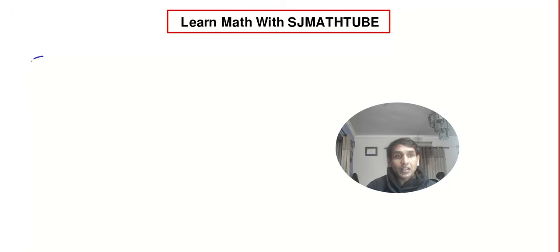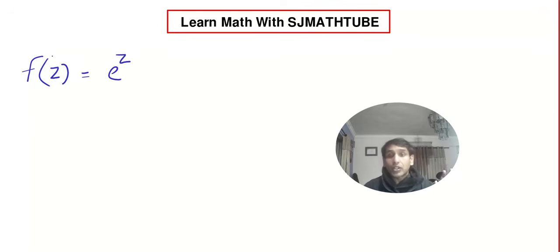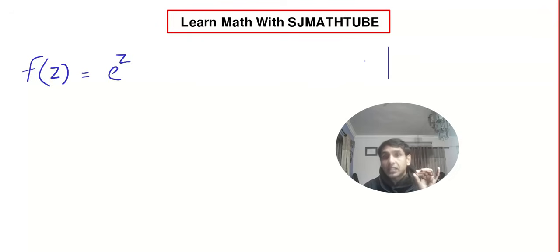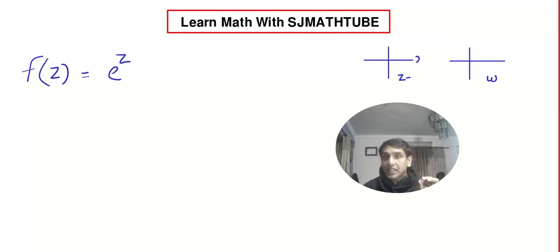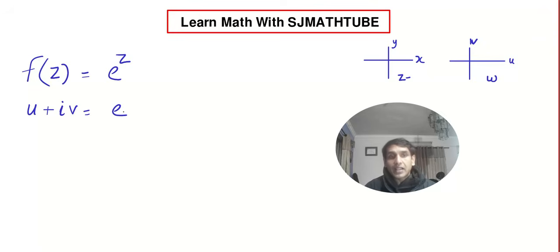Prove that the following function is analytic. I am going to use an exponential function. As I told you in the last videos, we are not talking about real-valued functions — we are talking about complex-valued functions. The input will be a complex number, called the Z-plane, and the output will be another complex number, called the W-plane. The input is x plus iy, and the output will be u plus iv.